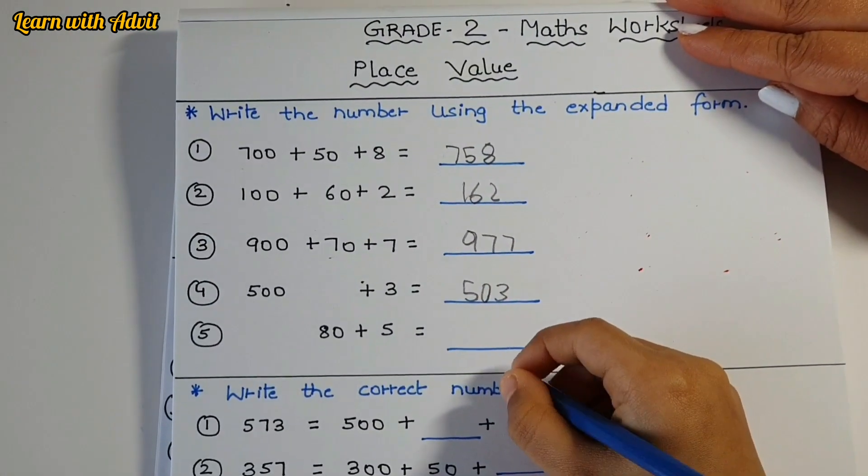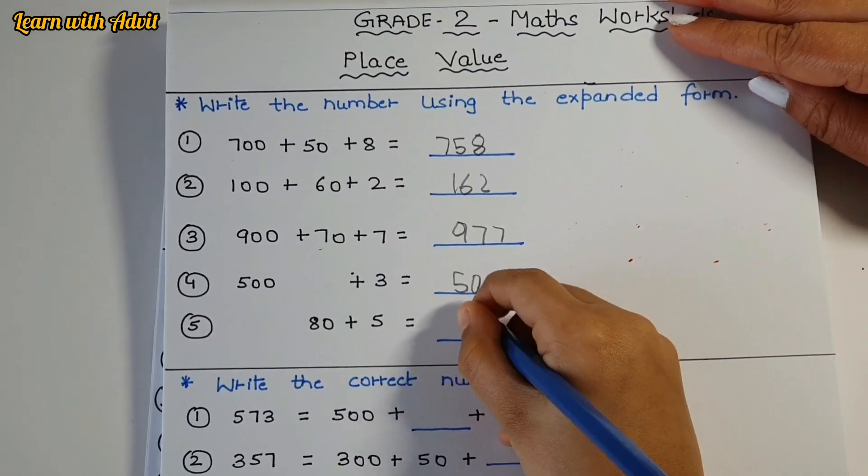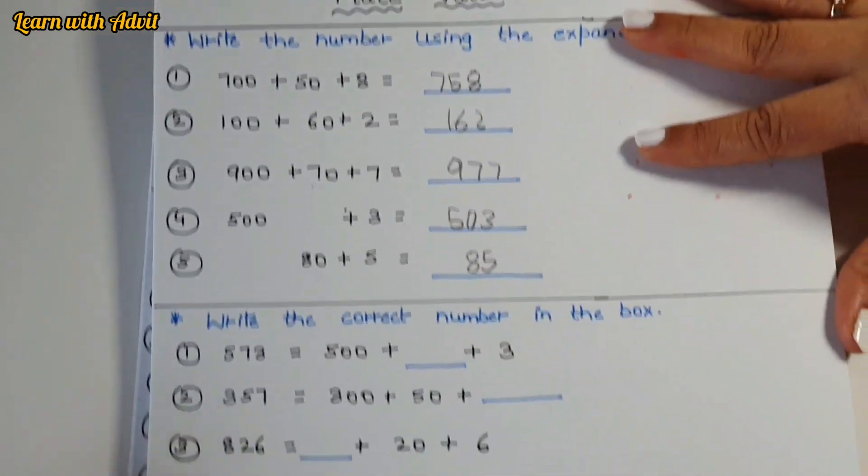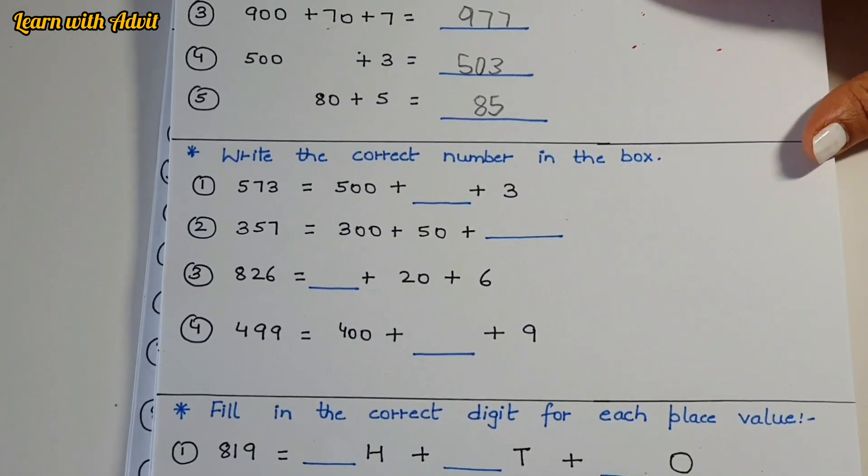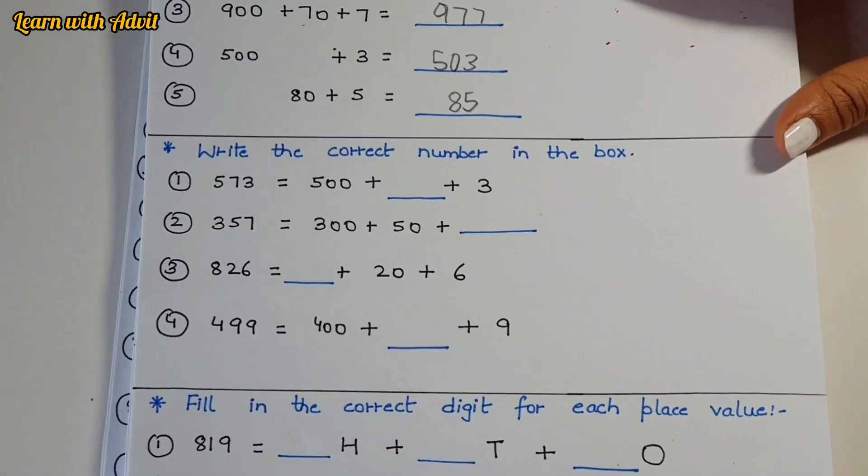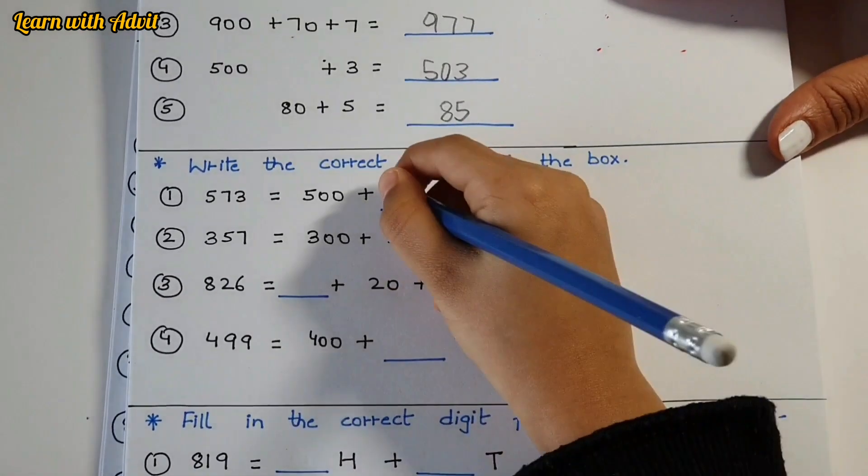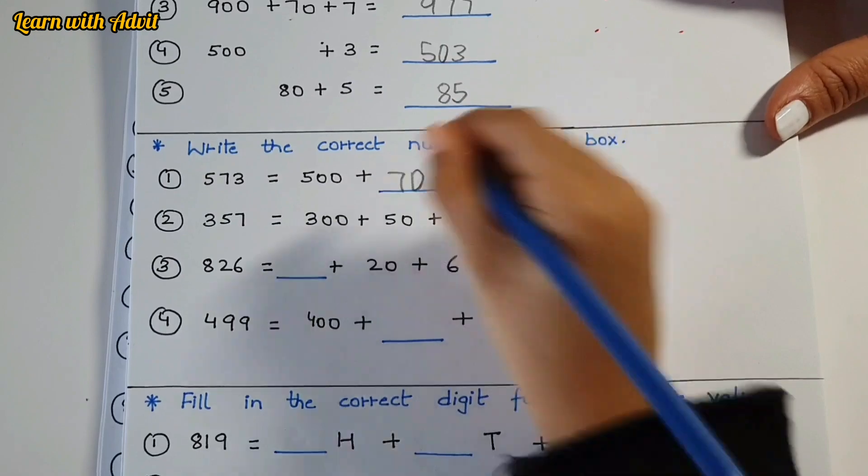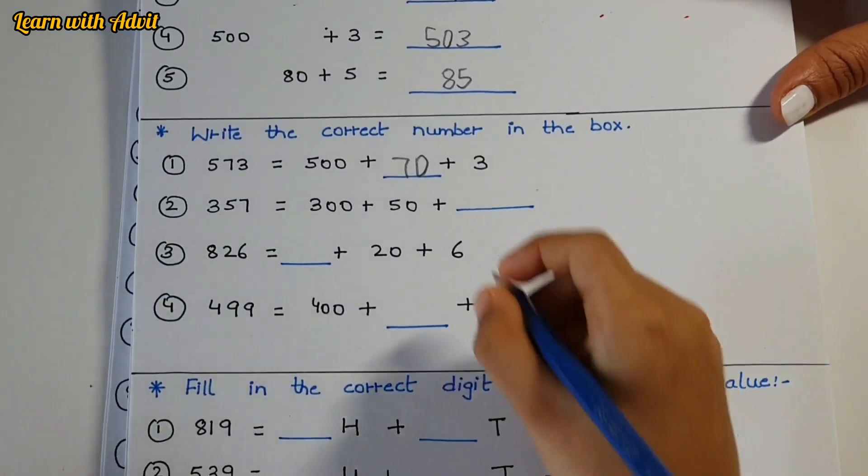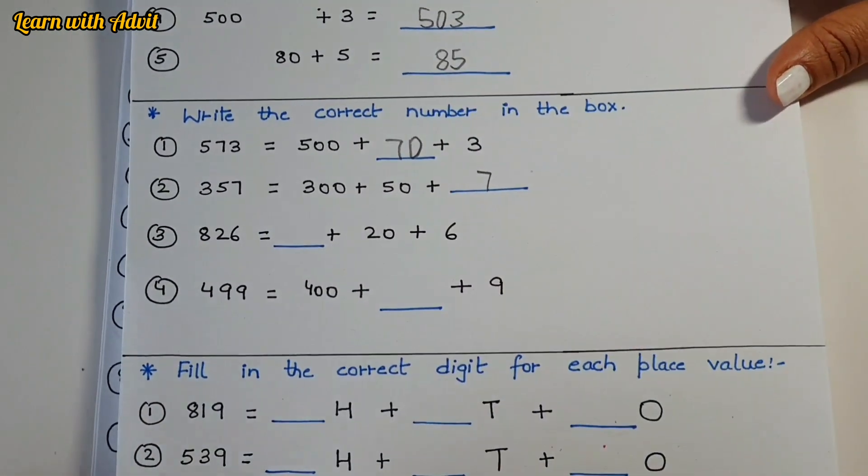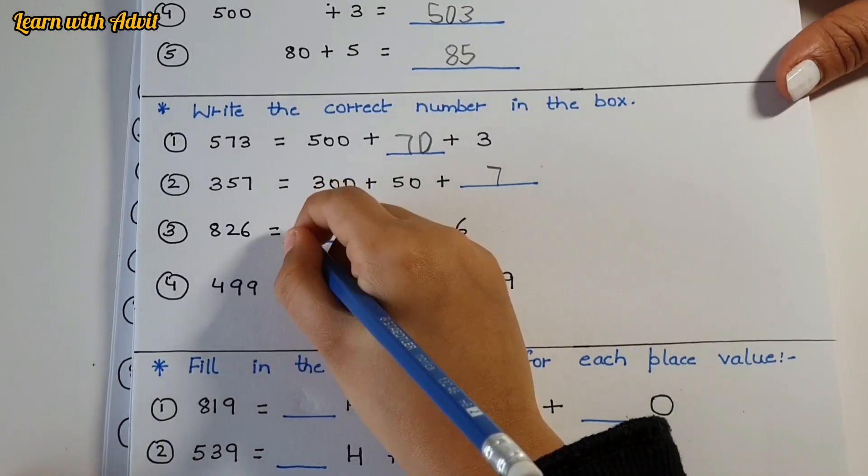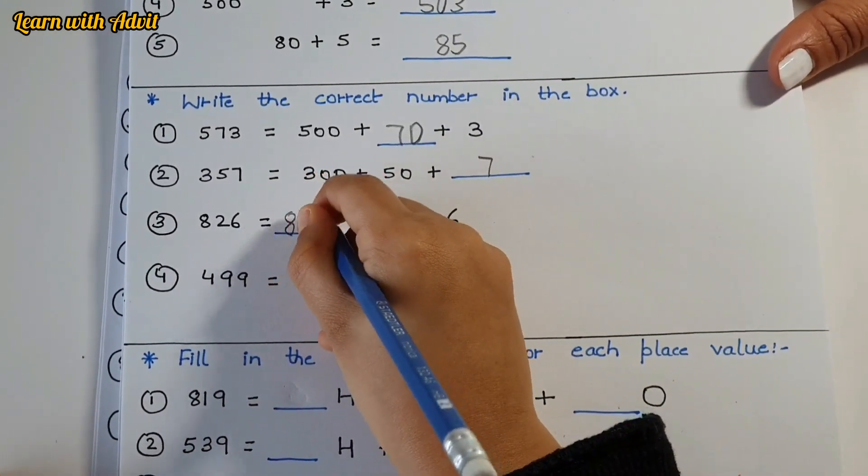Write the correct number in the box. 573 equals 500 plus what plus 3? 893, 357 equals what's missing? Seven. 826, 804, 499 equals 400 plus what? Very good.